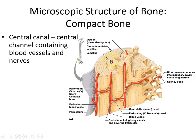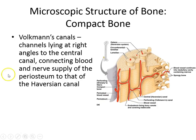That central portion in the osteon with the blood vessels and nerves is called your central canal. Layers form around the central canal as you build bone. You also have blood vessels connecting the central canals together — those are the Volkmann's canals — making sure blood gets all the way through.